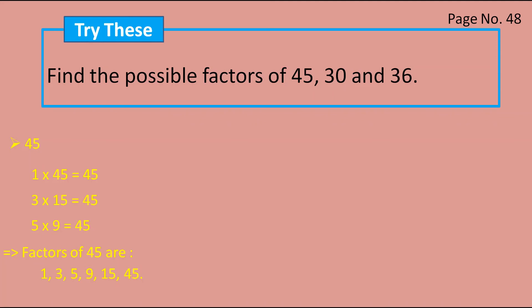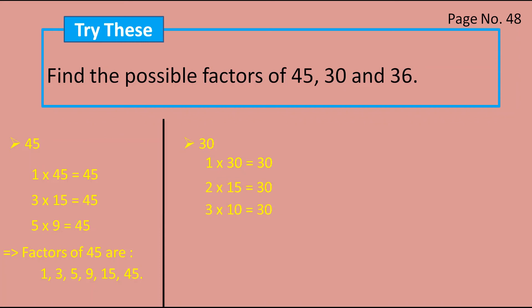Next number is 30. 30 comes in the table of 1: 1 × 30 = 30. Also 2 × 15 = 30. Then 3 × 10 = 30. And 5 × 6 = 30. So the factors of 30 are 1, 2, 3, 5, 6, 10, 15, and 30.